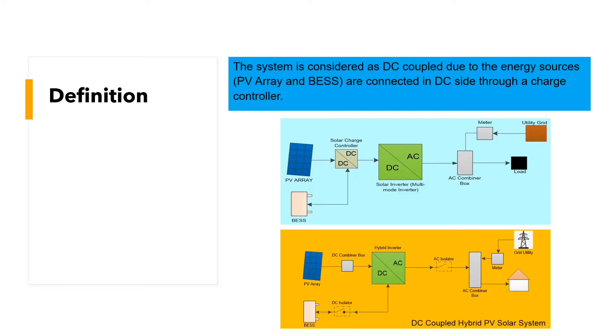The system is considered as DC coupled because the energy source — PV array and battery energy storage system — are connected on the DC side through a charge controller.